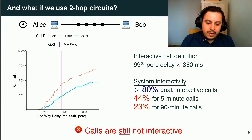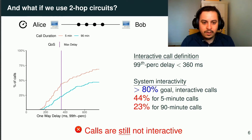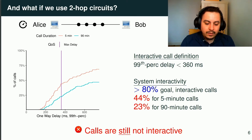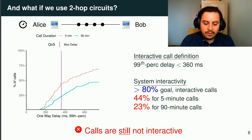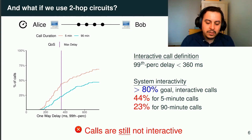We replay the same experiment with our optimized Tor configuration of only four relays. We can clearly see better results — 44% and 23% of interactive calls for the five-minute and ninety-minute calls respectively. But these results are still far below our 80% target. So even with the optimized configuration, calls are still not interactive.